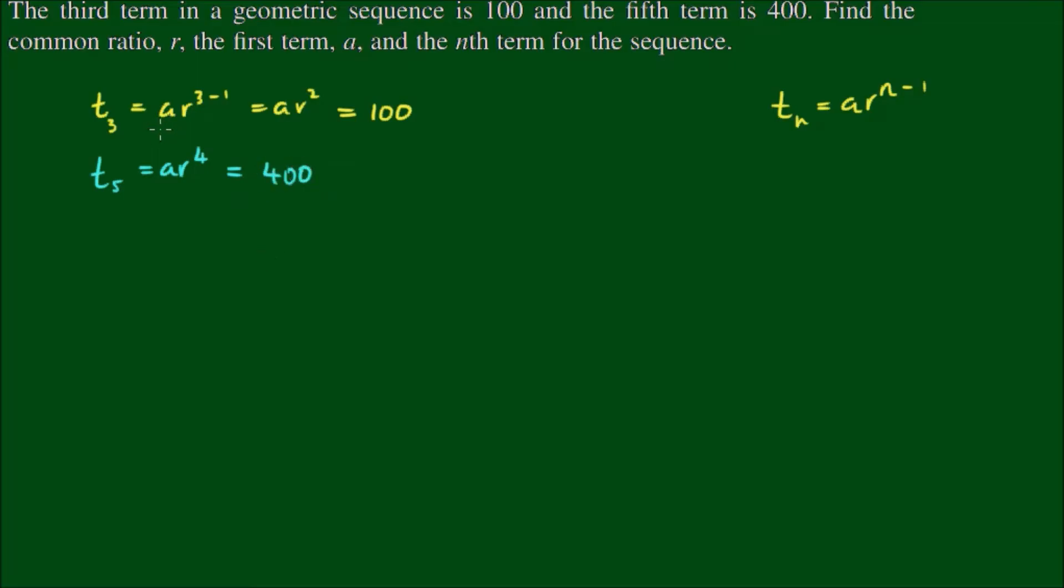So with this info we need to find the value of a and we need to find the value of r. Fundamentally we're comparing terms here and one way to compare them is to take the ratio of the two terms. So let's divide t5 by t3.